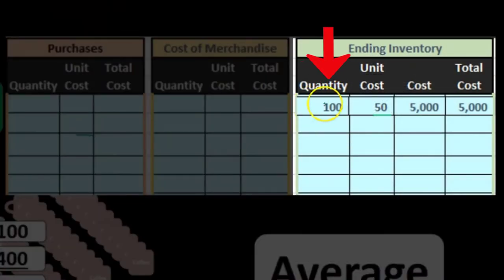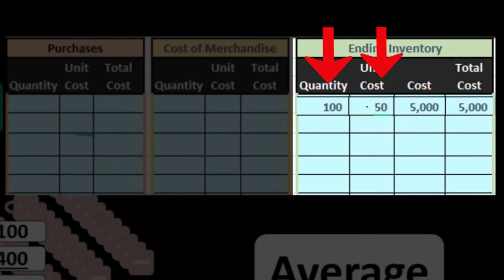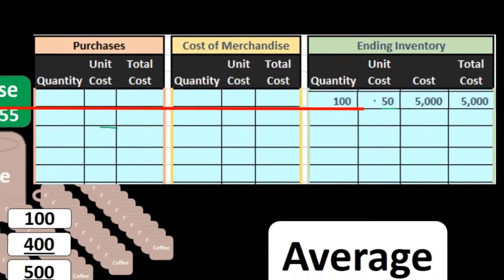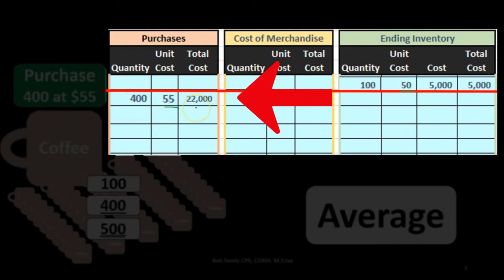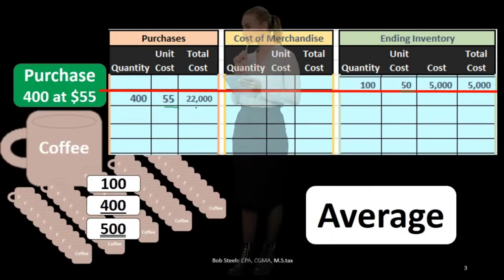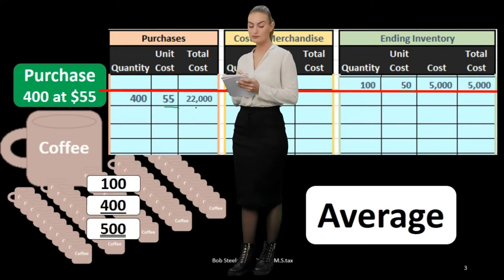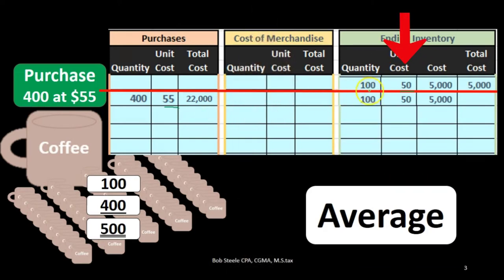So if we start off with 100 units at $50 — that's how much we paid for them — then we purchased more units. We purchased 400 more units at $55; notice the cost went up. That means we purchased $22,000 more worth of units. Now we need to determine when we sell these units, which ones did we sell? Did we sell them at $50 or at $55? What's the cost of the units we sold?